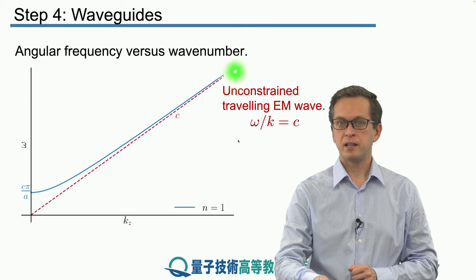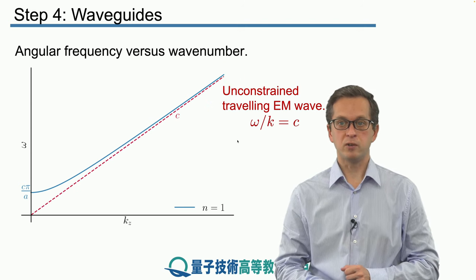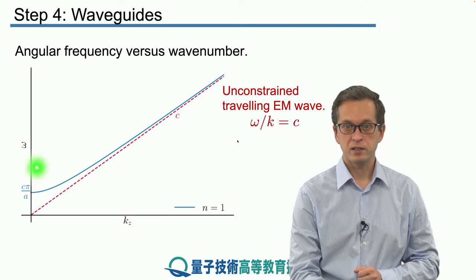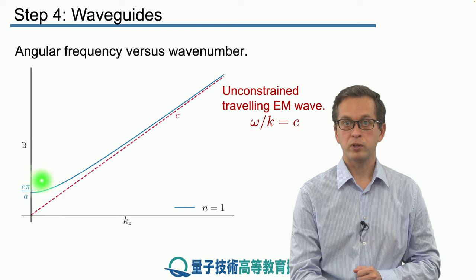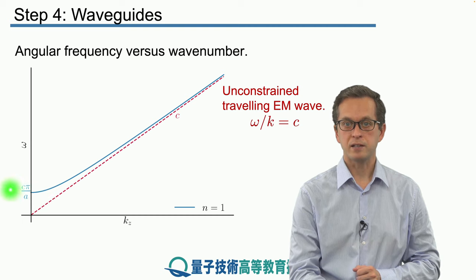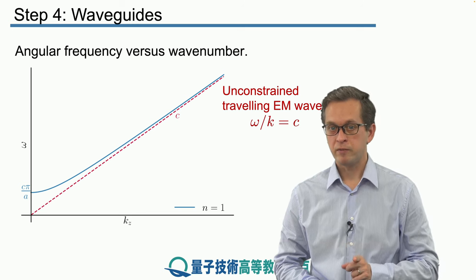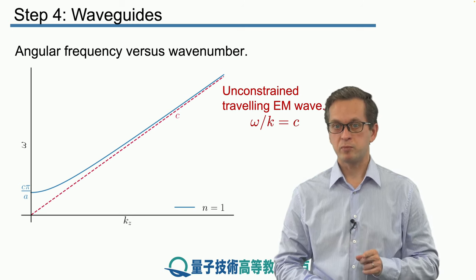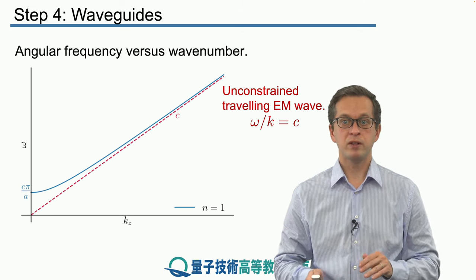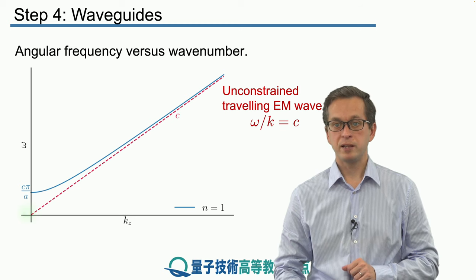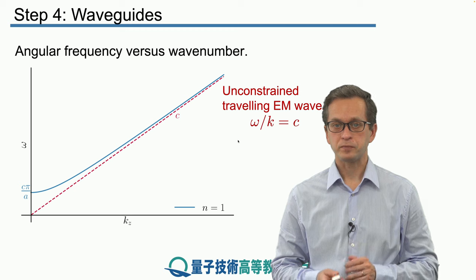Now, let's consider the case of a waveguide. The scenario changes quite a bit. For high kz and high omega, it's very similar to the unconstrained traveling wave. But for low frequencies, we see that we have the following crossover point at the omega axis, given by c pi divided by a. At that point, if the frequency of the wave is given by this expression, then kz is equal to zero. In other words, the wave does not propagate.